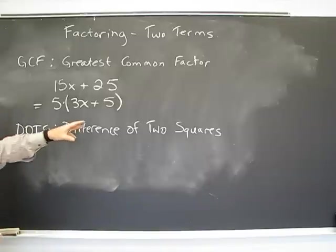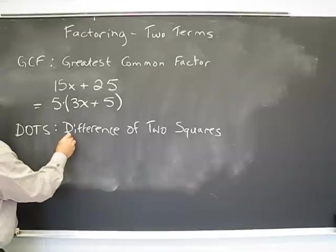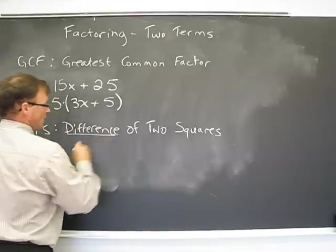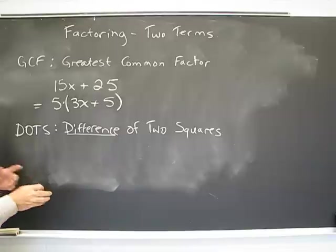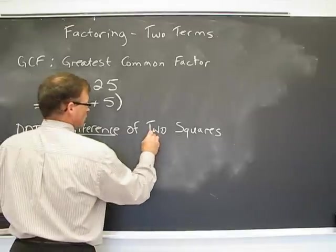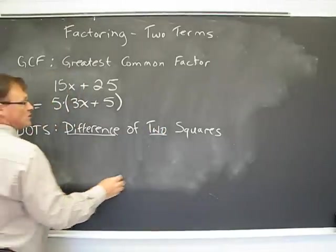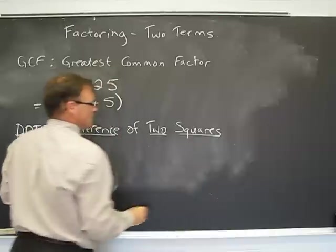Now, a difference in two squares has a couple of three very important details. Number one, it's going to have to be a difference. So the two terms will be opposite signed. Two, meaning two terms, and squares. Both of the terms have to be square rootable.